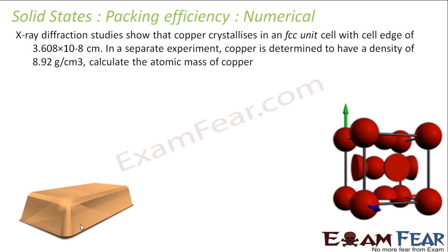This is my FCC with the cell edge of 3.608 × 10^-8 cm. So this length is given as 3.608 × 10^-8 cm. In another experiment, copper is determined to have a density of 8.92 g/cm³. So here you have to calculate the atomic mass of copper.